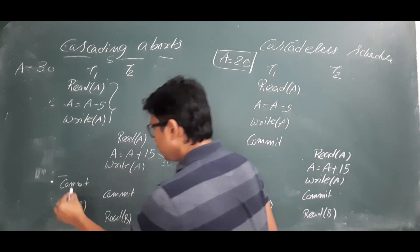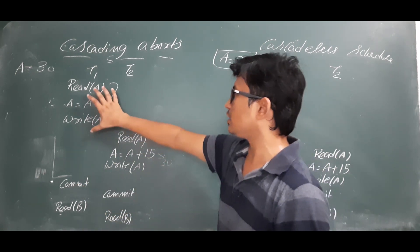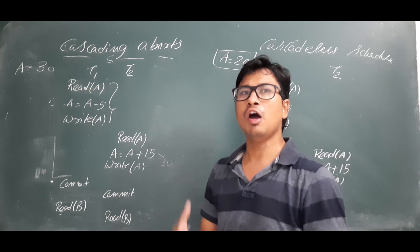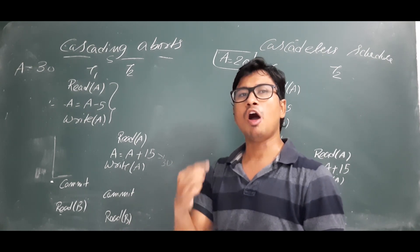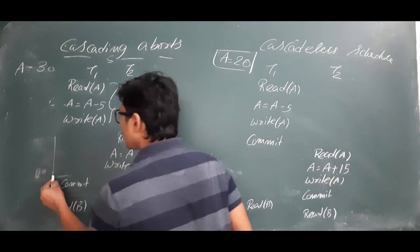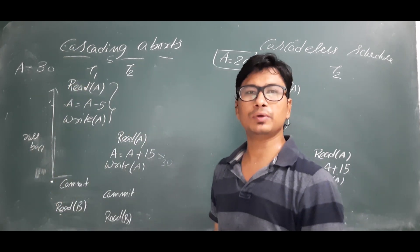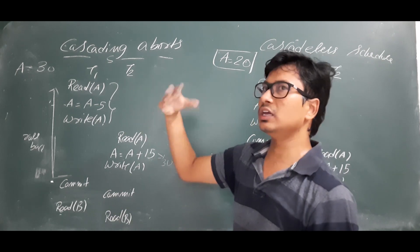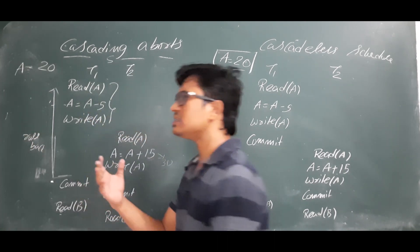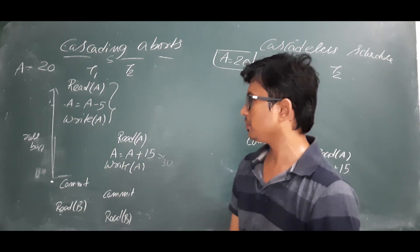Now, interleaving has happened. Transaction one is about to perform the commit operation, but before it does, there is some failure. To preserve the atomicity property — either you perform all operations or none, all or nothing — since I cannot execute all operations due to the failure, I have to roll back. Roll back means you go back to where you started. The initial A value for transaction one was 20, so it updates A back to 20.